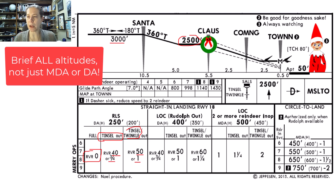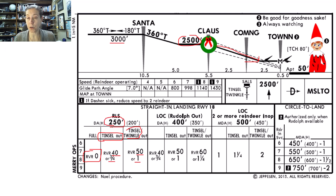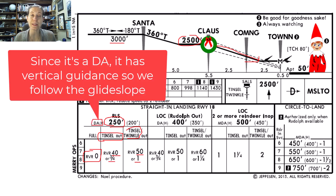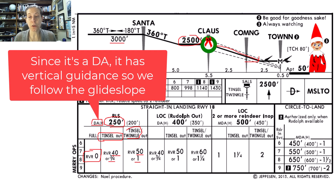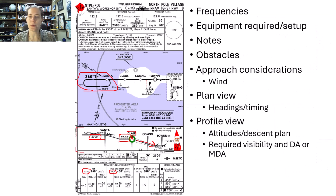I also want to think about what would be a good descent angle to get me down to the decision altitude. Jeppesen hasn't published one for this chart, but since it has a DA next to it, that means it's a decision altitude and I should have vertical guidance, which should take me right down to that 250-foot decision altitude. So that covers my descent briefing — I brief all my minimums.